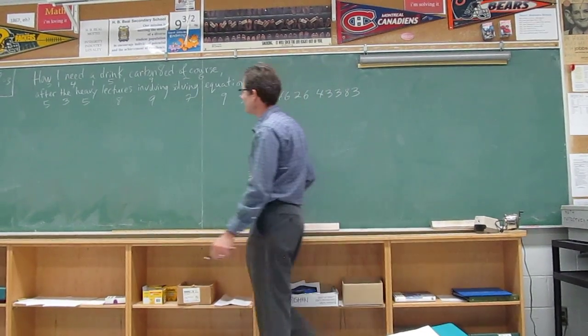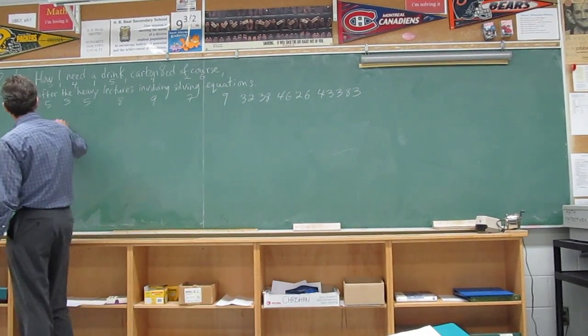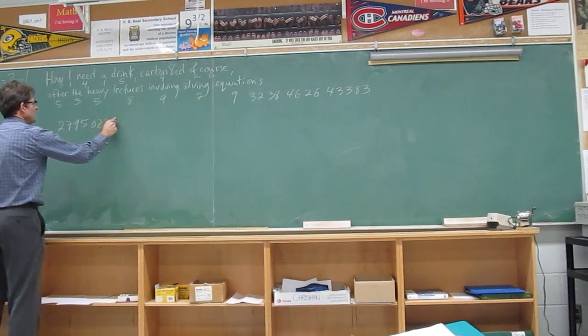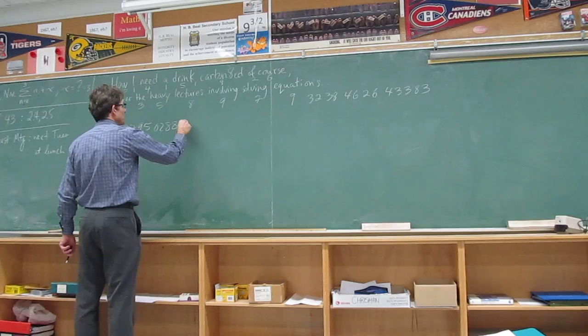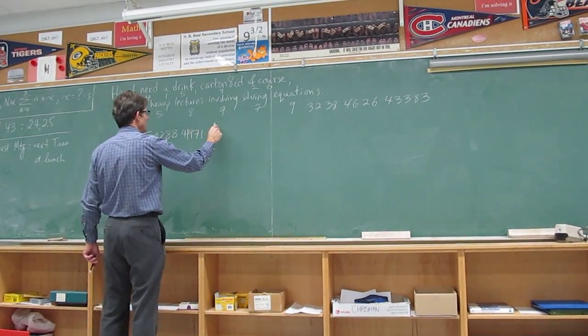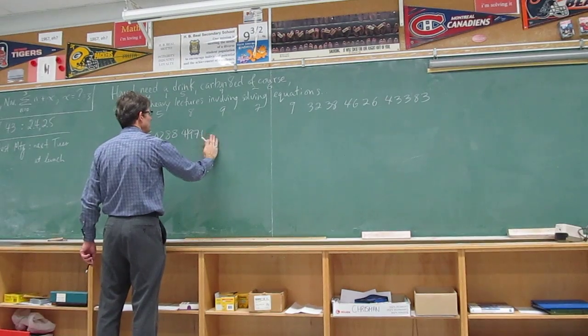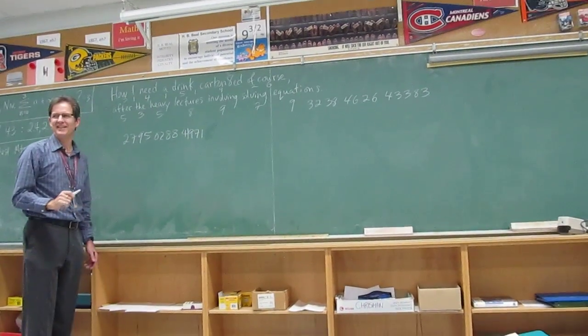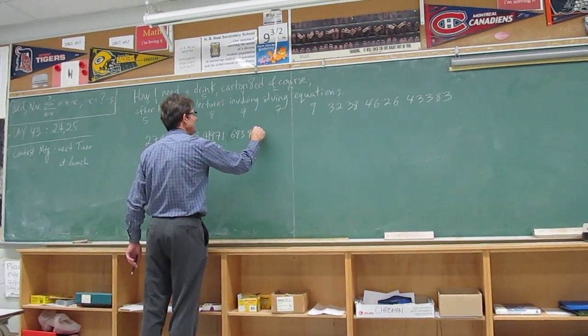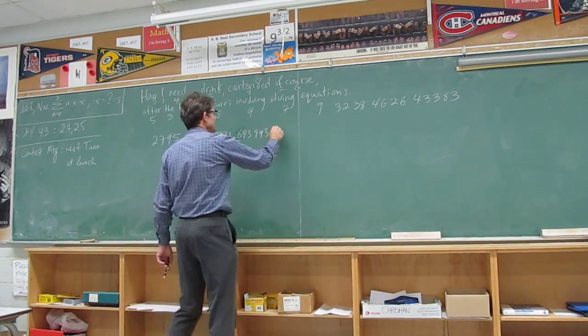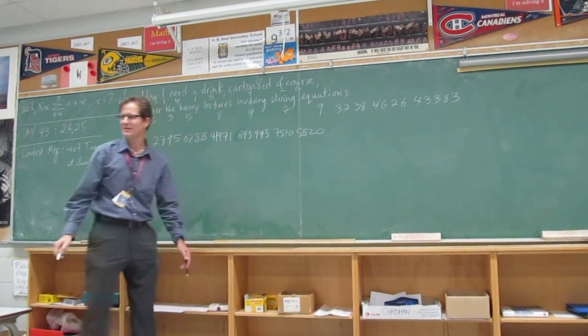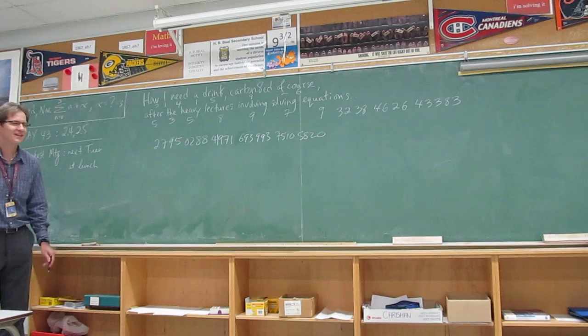So on the second row it goes two, seven, nine, five, zero, two, eight, eight, four, one, nine, seven, one. Hang on a second. Okay. Six, nine, three, nine, nine, three, seven, five, one, zero, five, eight, two, zero. Am I right? So far so good? All right.